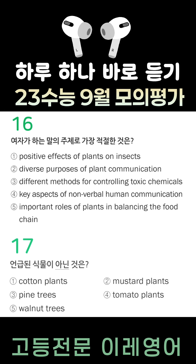Second, plants communicate to recognize their relatives. When mustard plants recognize their family members by exchanging chemical signals, they grow shorter roots to avoid competing with one another.